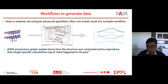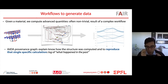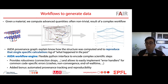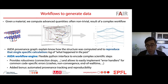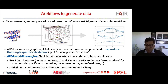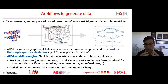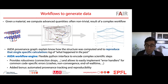The AiiDA provenance graph is a very detailed description of how a specific piece of data came to exist and which parameters were used. Having workflows goes one step beyond — the workflow engine provides a flexible Python interface so you can not only see what someone else ran, but run a new calculation for another material or with different parameters using the same logic. The workflow engine provides robustness for connection drops to the supercomputer and makes it easy to implement error handlers — functions that detect when a code crashes and know how to fix the inputs.